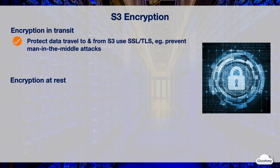Encryption in transit is a way to protect data traveling to and from S3, using Secure Sockets Layer or Transport Layer Security. When you send data without encryption in transit, anyone who eavesdrops the communication can see the information. Both TLS and SSL are designed to provide communications security over a computer network.